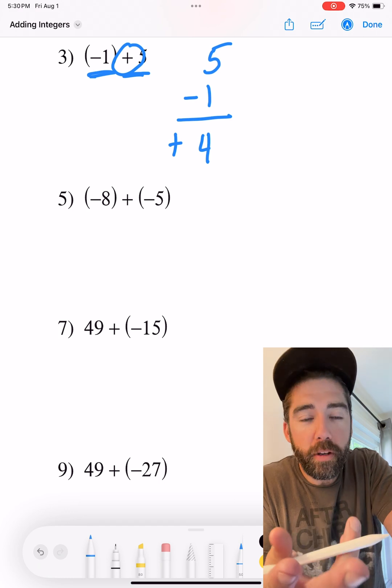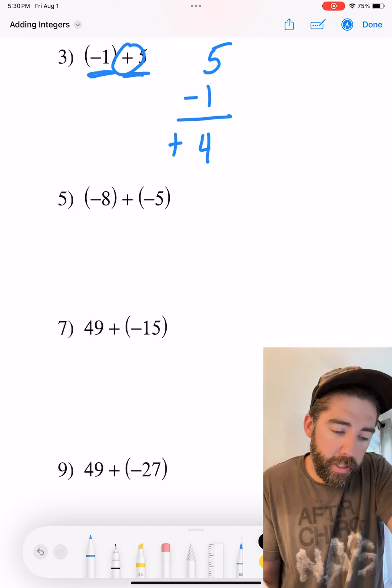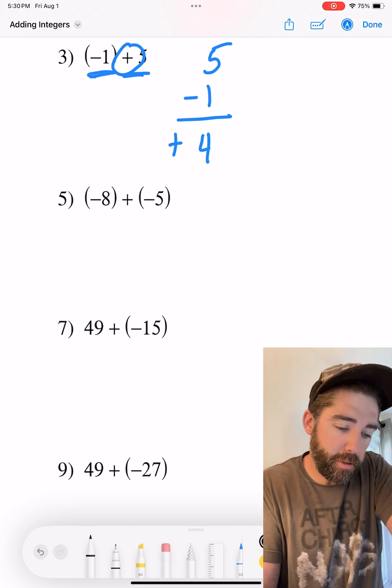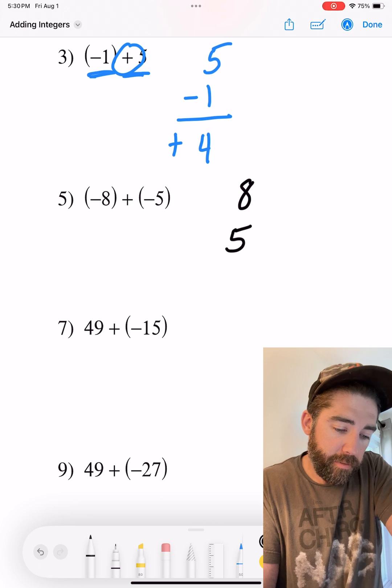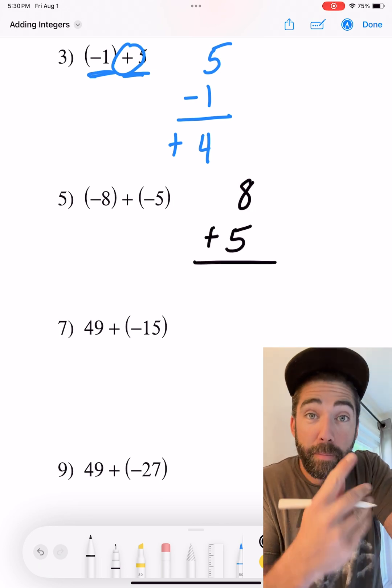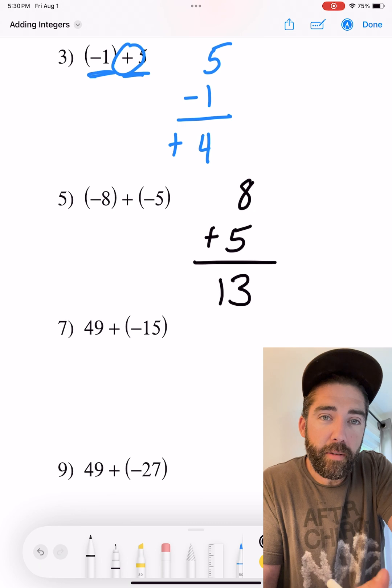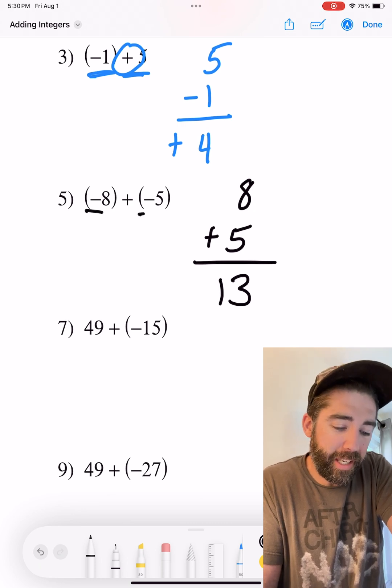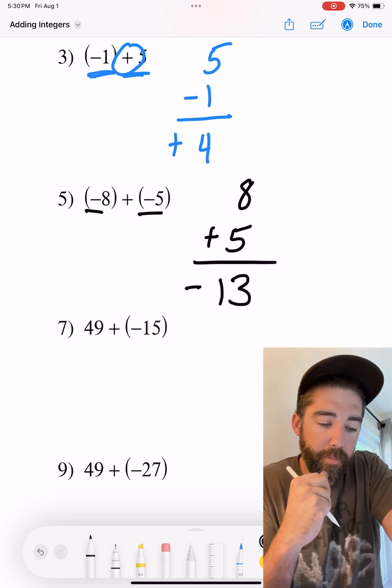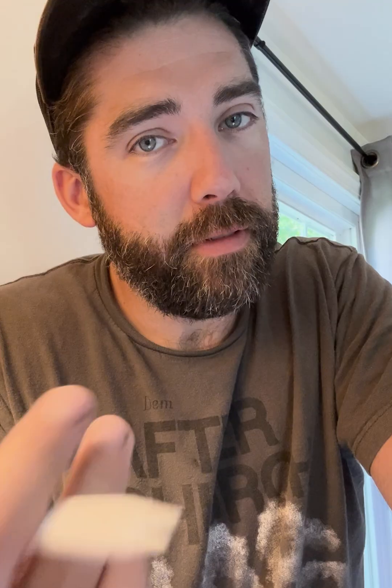If they're both negative or if they're both positive, all you need to do is add these numbers together. So we're going to take 8 and 5 and add them together. 8 plus 5 is 13. But because they're both negative, we're going to keep the negative. If they were both positive, you got it, keep the positive.